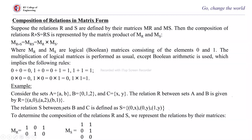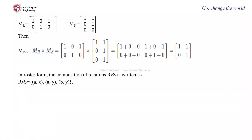Verifying with the normal method: starting from R, (a,0) with (0,x) gives (a,x); (a,0) with (0,y) gives (a,y); (a,2) has no pair starting with 2 in S; (b,1) with (1,y) gives (b,y). This matches the matrix result, confirming the composition.